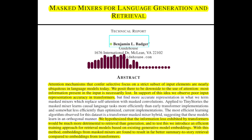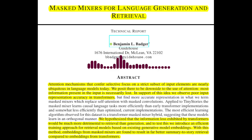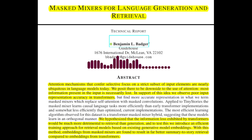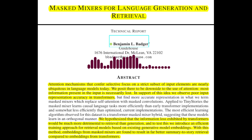The paper finds that masked mixers are comparable to transformers in terms of training efficiency for causal language modeling. They achieve similar performance on the Tiny Stories dataset, a benchmark for evaluating language generation capabilities. However, optimized transformers with techniques like FlashAttention-2 can outperform masked mixers in this regard.